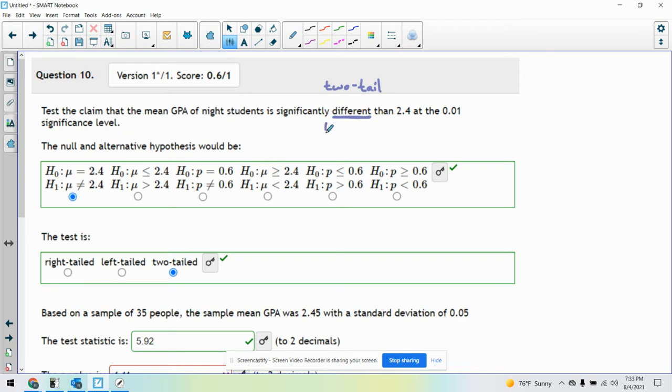If I said significantly less than, let's see, that would look something like this one right here, right? Less than would be a left-tail. Okay, if I said significantly greater than, that would be this guy, and that would be a right-tail.